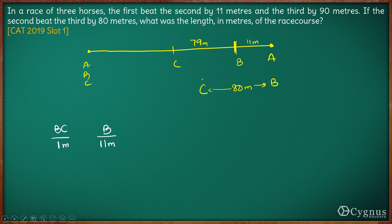For every 11 meters that B travels, the distance between B and C increases by 1 meter. For the distance between B and C to increase by 79 meters, since initially they were at the same point, we can calculate the distance traveled by B.